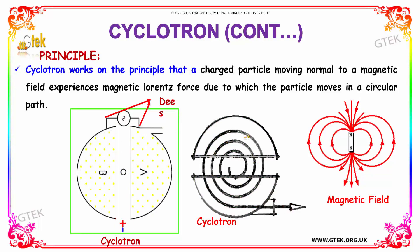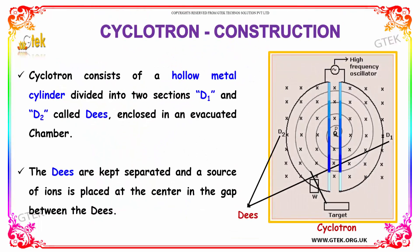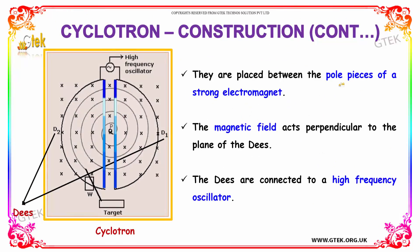Due to this force, the particles rotate in a circular path and are taken out. You are able to see the two D's here. Cyclotron consists of a hollow metal cylinder divided into two sections, D1 and D2, enclosed in an evacuated chamber. The D's are separated and a source of ions is placed in the center in the gap between them. They are placed between the pole pieces of a strong electromagnet, with the magnetic field acting perpendicular to the plane of the D's, and the D's are connected to a high frequency oscillator.